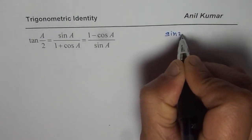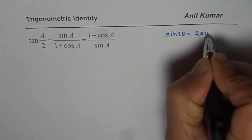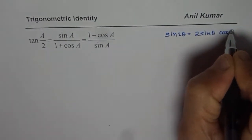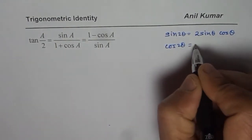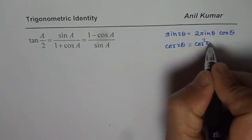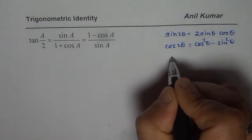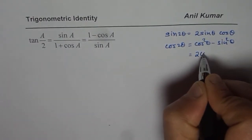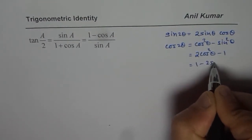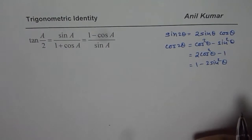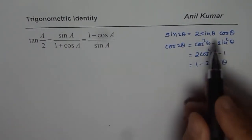We know sine of 2 theta could be written as 2 sine theta cos theta. Cos of 2 theta can be written as cos squared theta minus sine squared theta. It could also be written as 2 cos squared theta minus 1, or 1 minus 2 sine squared theta. These are a few double angle identities which we know about.